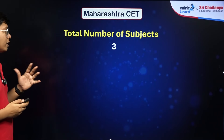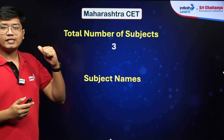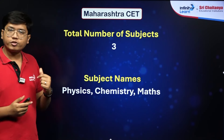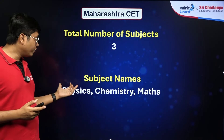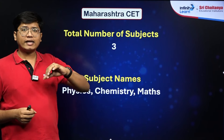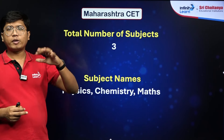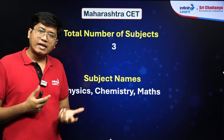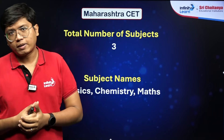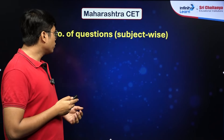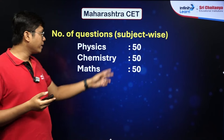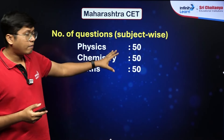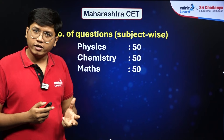The total number of subjects are three — physics, chemistry, and maths — the same as JEE Mains. However, unlike JEE Mains where all subjects have the same weightage, in the Maharashtra CET the total number of questions remains the same across subjects but their marking schemes are different.